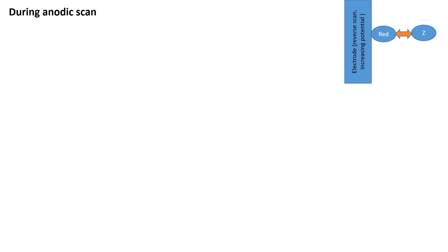During the reverse oxidation process, as soon as the red is reoxidized to ox, the local concentration of red is reduced. But to maintain the chemical equilibrium between red and Z, some of the product Z will convert back to form red, and the produced red will again undergo oxidation at the electrode. This process of oxidation of red and conversion of Z to red and further oxidation of that converted red to ox will continue until the potential limit is reached or the concentration of Z becomes zero.